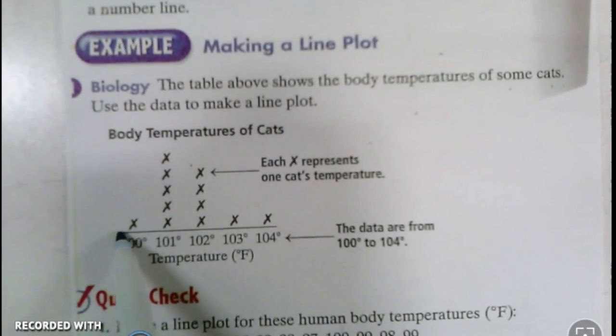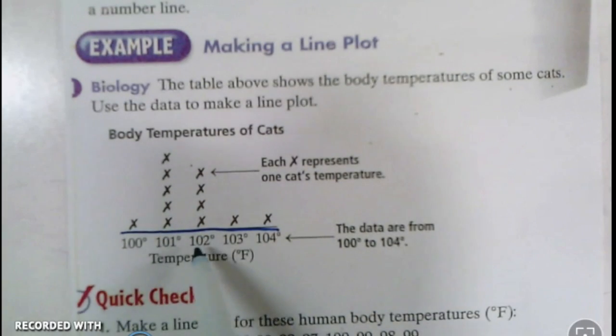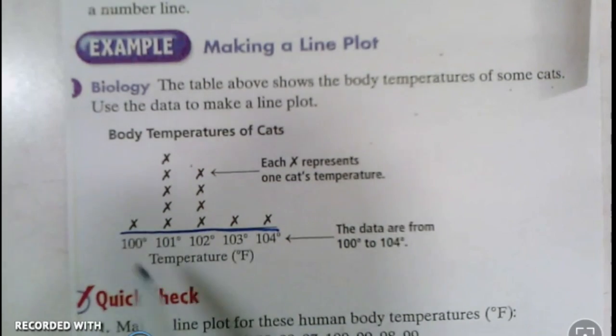So I'm going to write those numbers along the bottom right here. I draw a line and then I write 100, 101, 102, 103, and 104, showing the range that all my data will fall within.